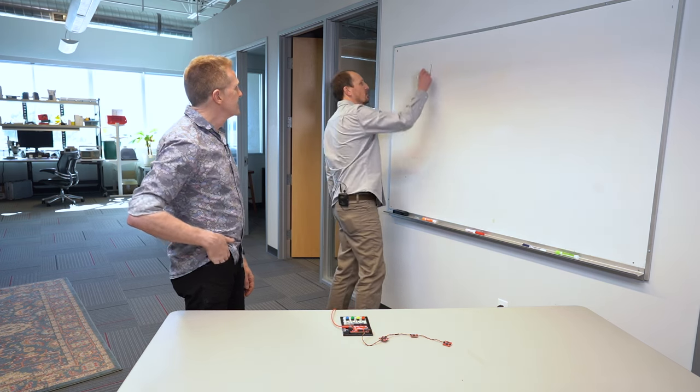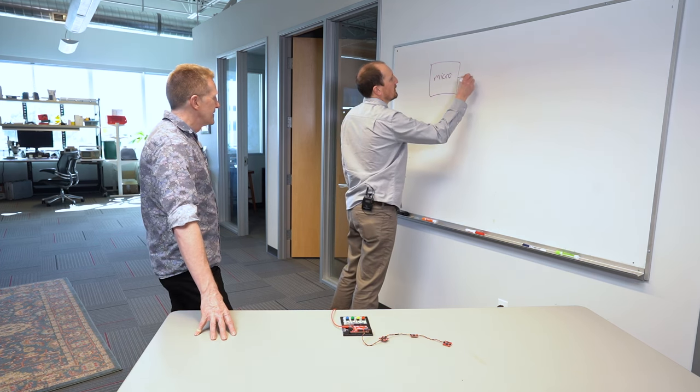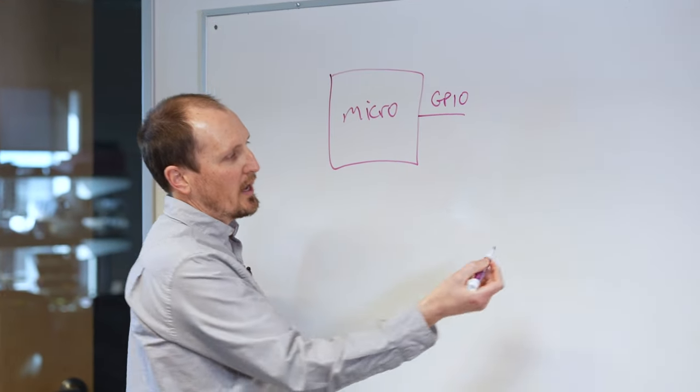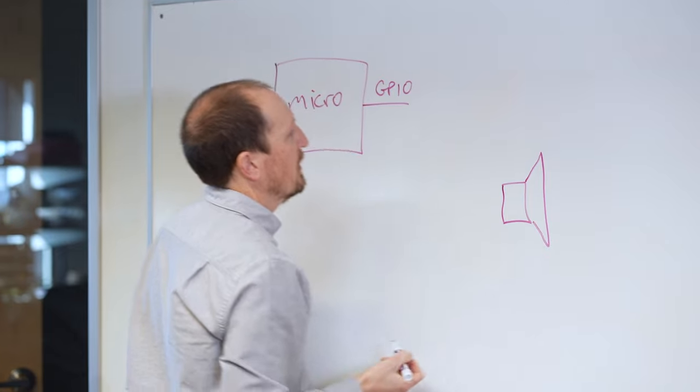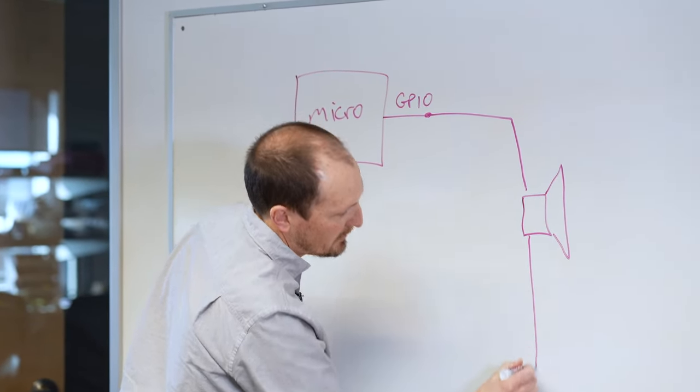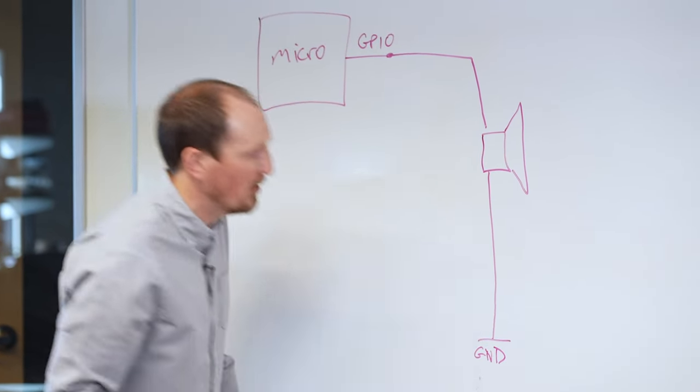Most of the time when you use a buzzer, you've got your microcontroller. And like a GPIO, right? Right. And you might have your buzzer over here. And you'd probably wire directly to the buzzer and then directly to ground. Oh, GND. There we go.